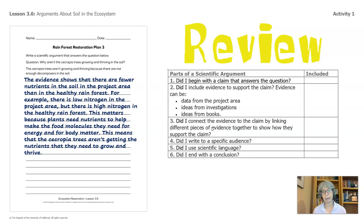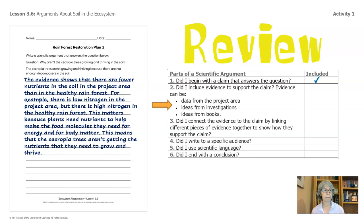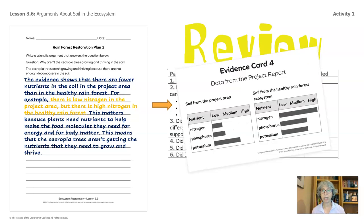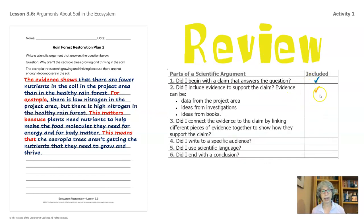Let's pull up our checklist. Did we begin with a claim that answers the question? The claim is written here: the cecropia trees aren't growing and thriving because there are not enough decomposers in the soil. So everybody can check that one off. Now let's look at the second one — where's our evidence? There is low nitrogen in the project area, but there is high nitrogen in the healthy rainforest. We got that from evidence card four. That's just one piece of evidence; we need multiple pieces of evidence.